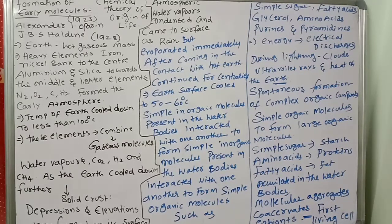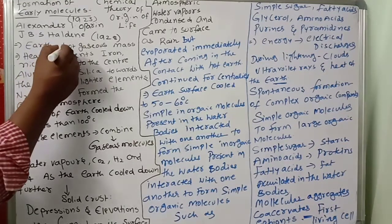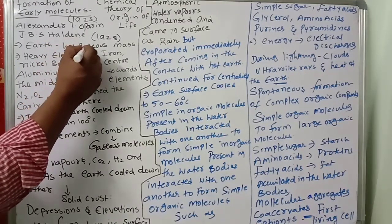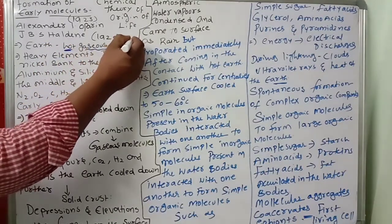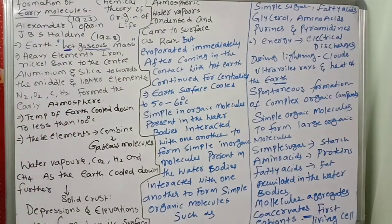Observe very carefully. First, the earth was originally a hot, gaseous mass — very hot, gaseous mass. This is important. Very hot conditions existed in the primitive earth.